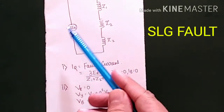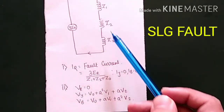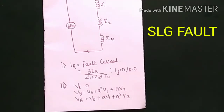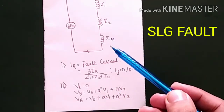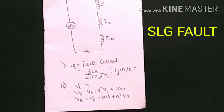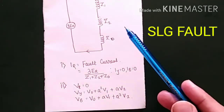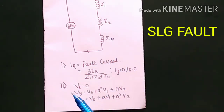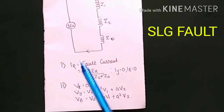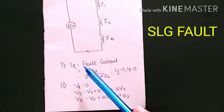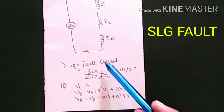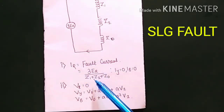This is the 3R voltage in series with Z1, Z2, and Z0. Z1 is the positive sequence, Z2 is the negative sequence, and Z0 is the zero sequence impedance. If there is a fault impedance also, we have to add plus 3ZF. The fault is occurring on R phase, so IR is the fault current: IR = 3ER / (Z1 + Z2 + Z0). This is the formula for fault current in single line to ground fault.